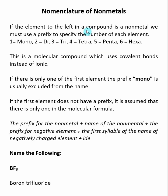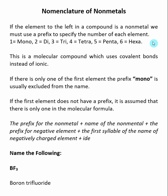When the element all the way to the left in a compound is a non-metal, we must use prefixes to specify the number of each element inside of the compound. The prefixes are mono for one, di for two, tri for three, tetra for four, penta for five, and hexa for six, and these prefixes can continue if you have more than six of a given element.